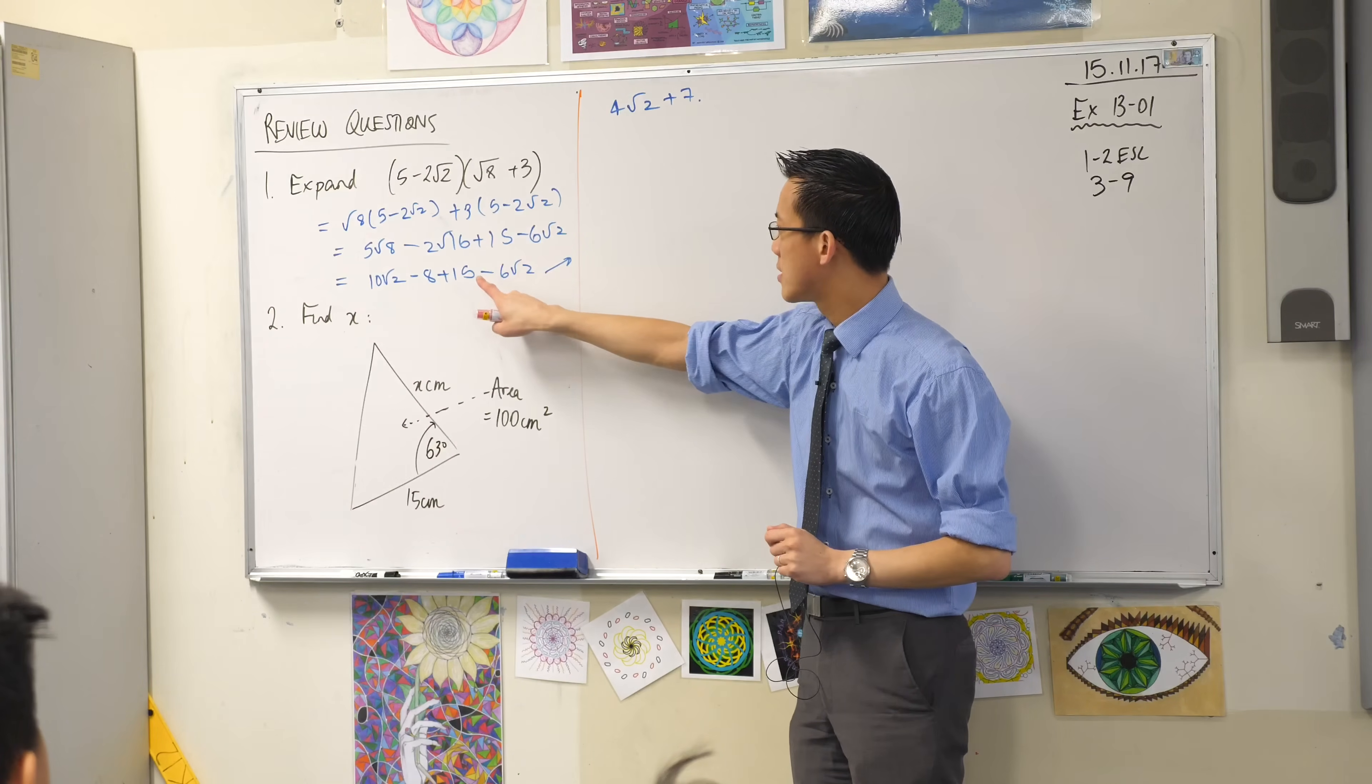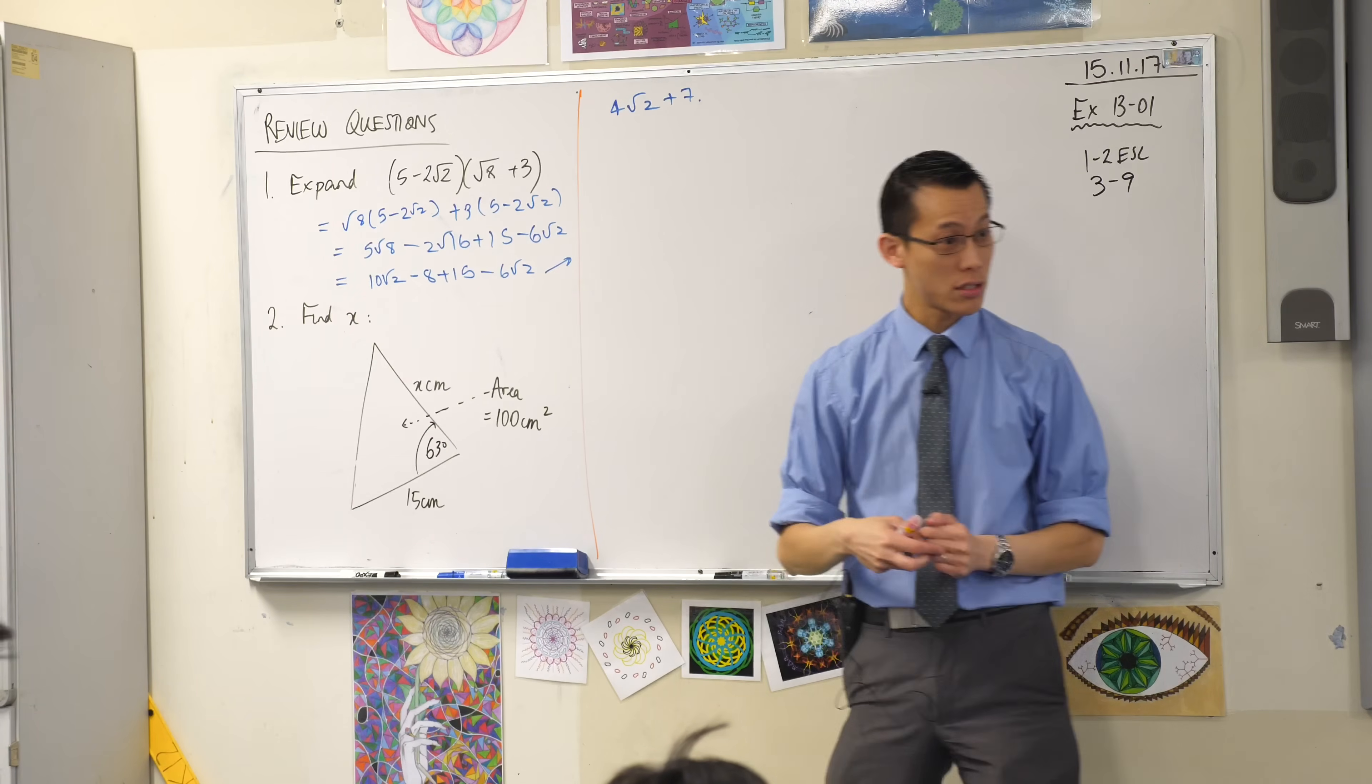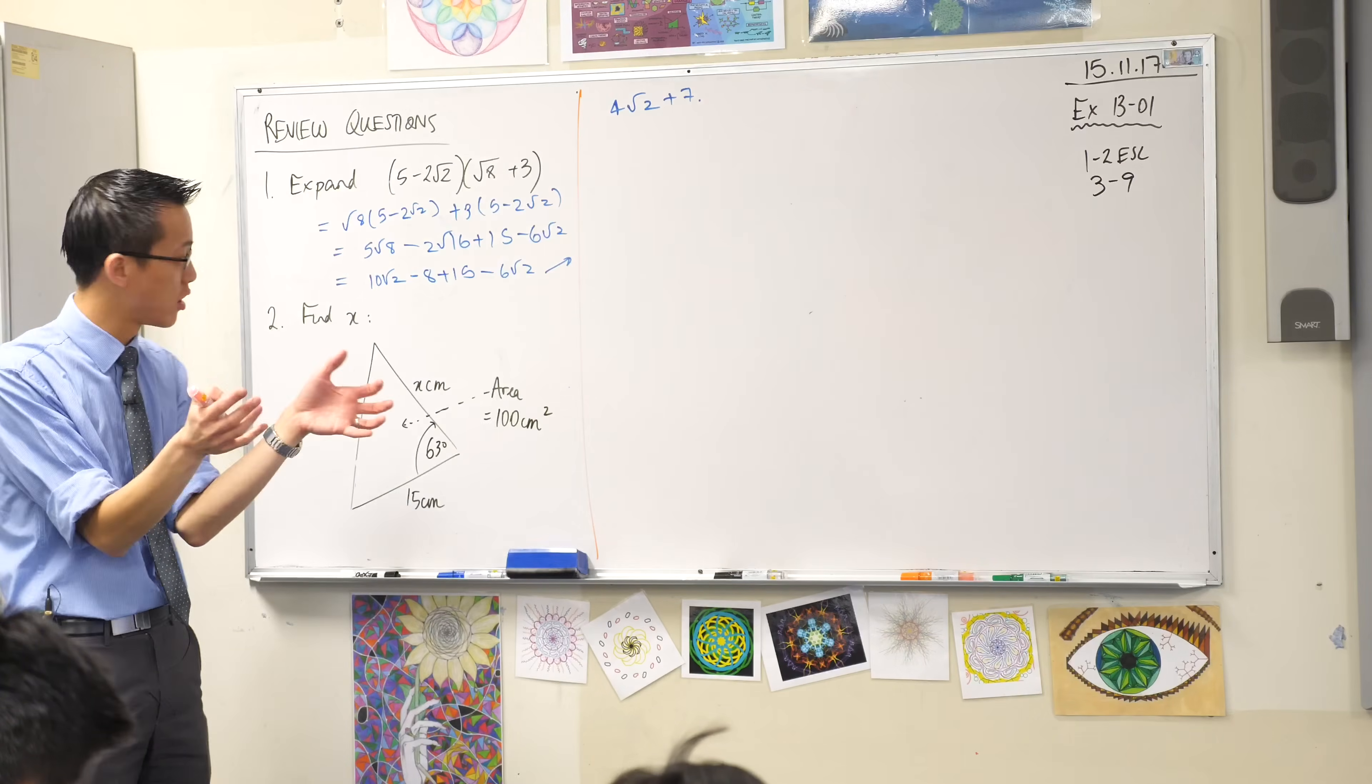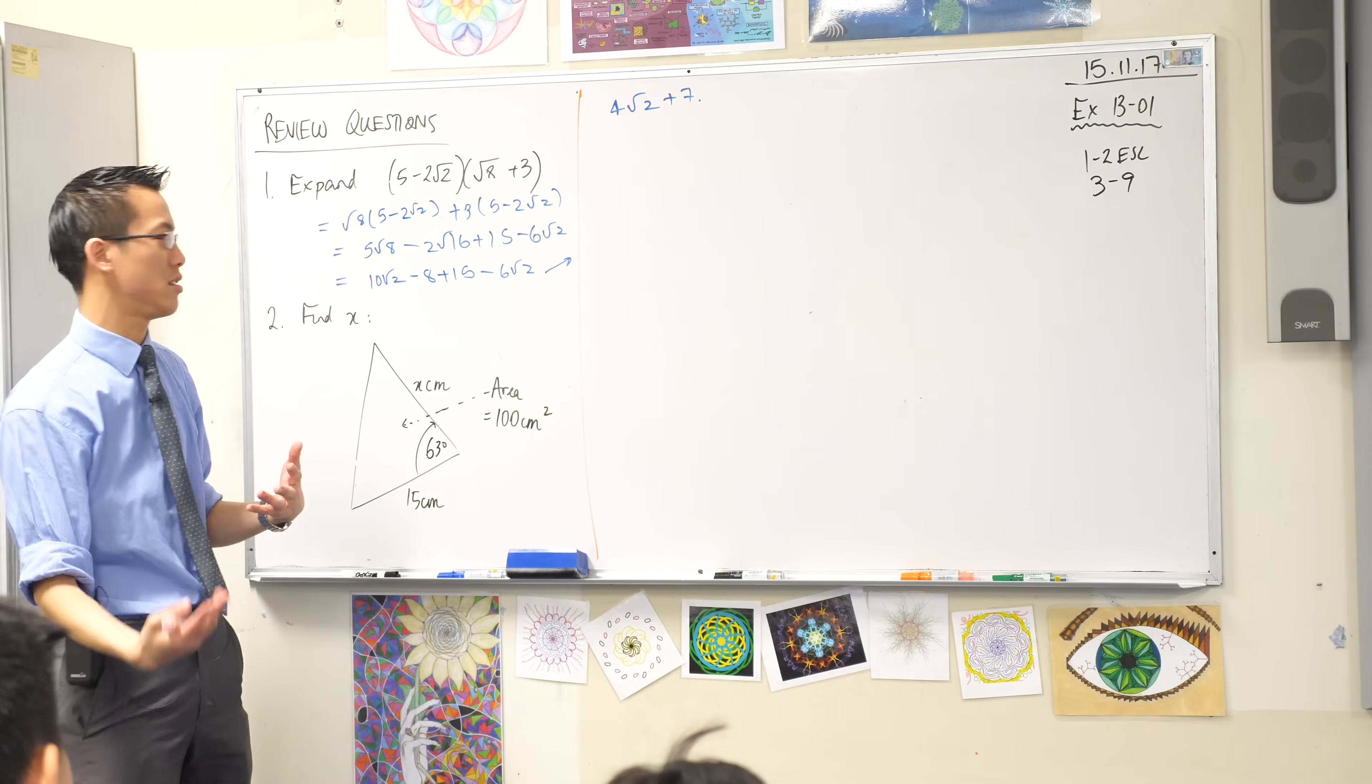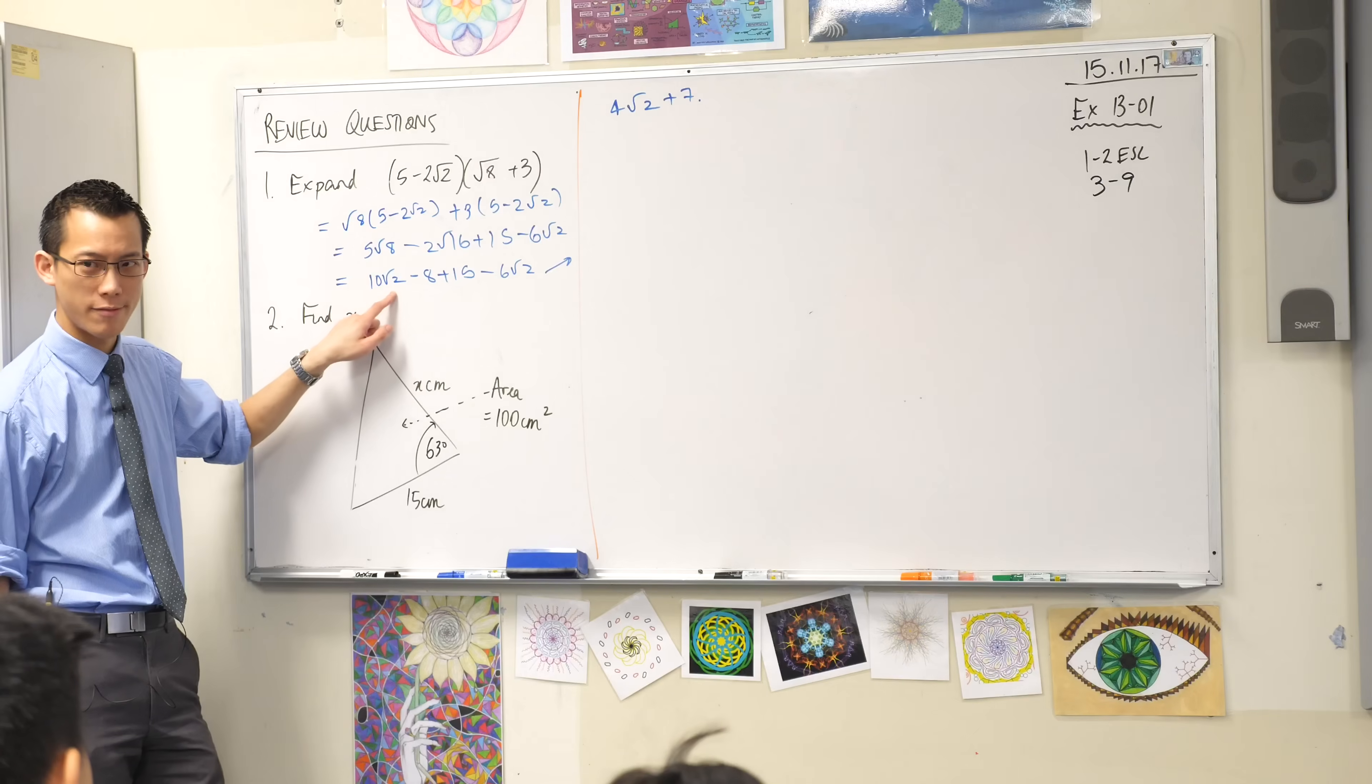So from there he's then simplified two things, the first two terms. So that square root of 8, we can write that with a smaller number under the square root which is a bit easier to work with. So instead of the square root of 8, what's he converted that into in the next line?